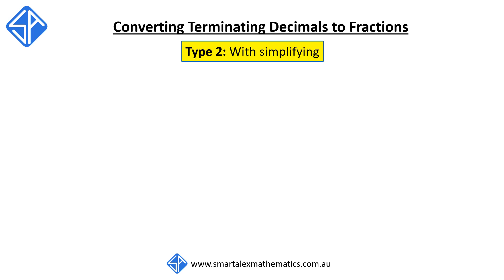Our next set of examples are of the second type, where after converting the decimals to fractions, we need to further simplify to simplest form. Our first example is 0.4. One digit after the decimal point — we read this as 4 tenths, equal to 4 over 10. Because 4 over 10 isn't in simplest form, we divide top and bottom by the highest common factor of 2, and this gets reduced to 2 fifths. So 0.4 is equal to 2 fifths.